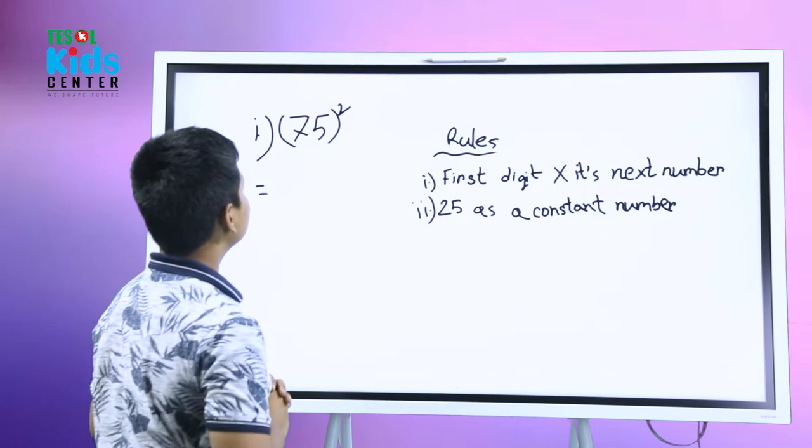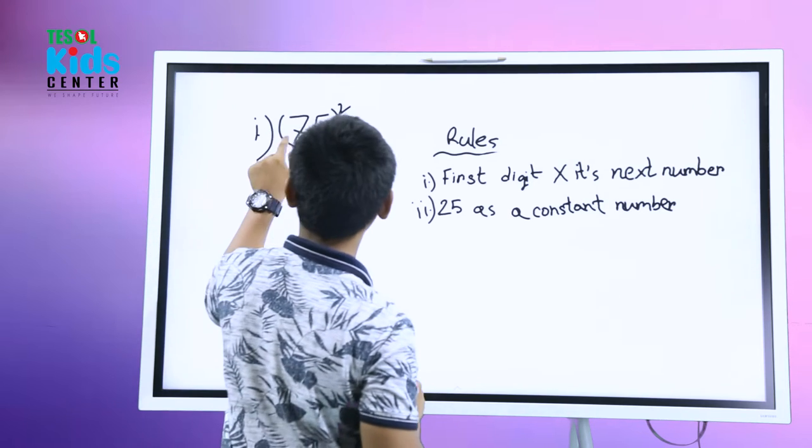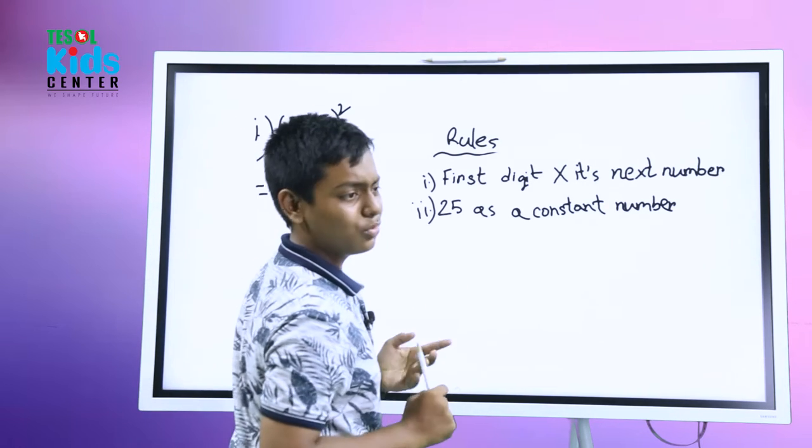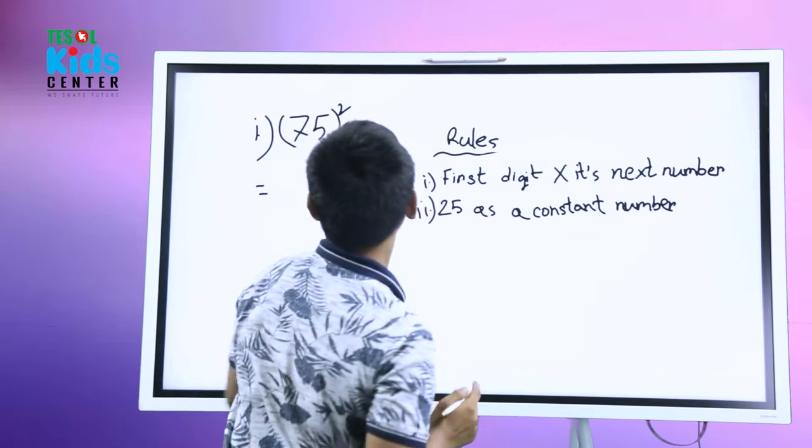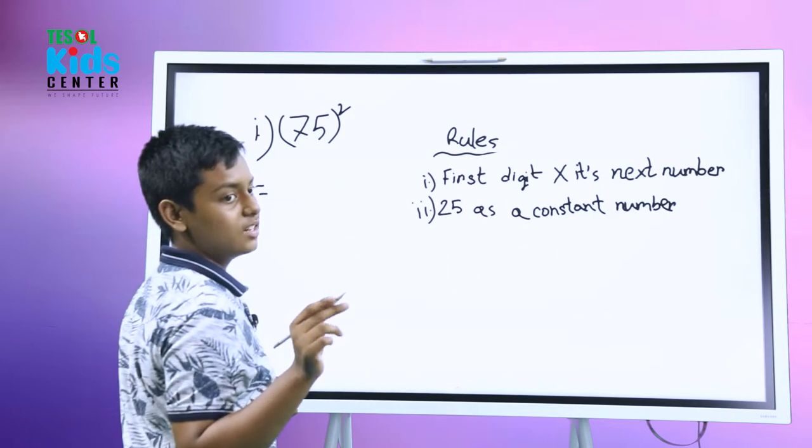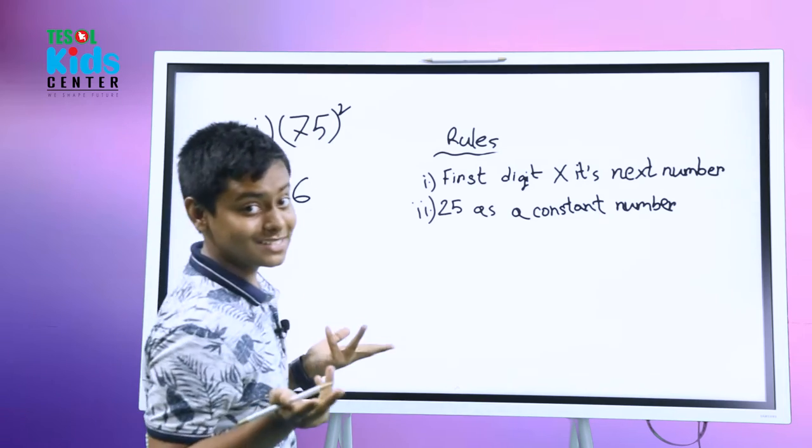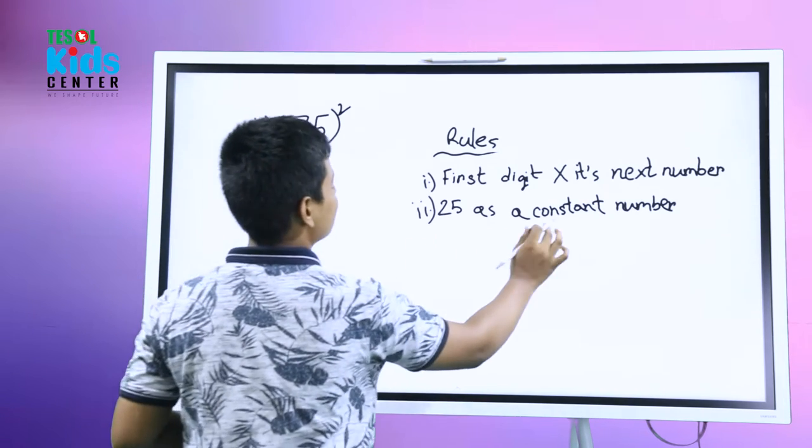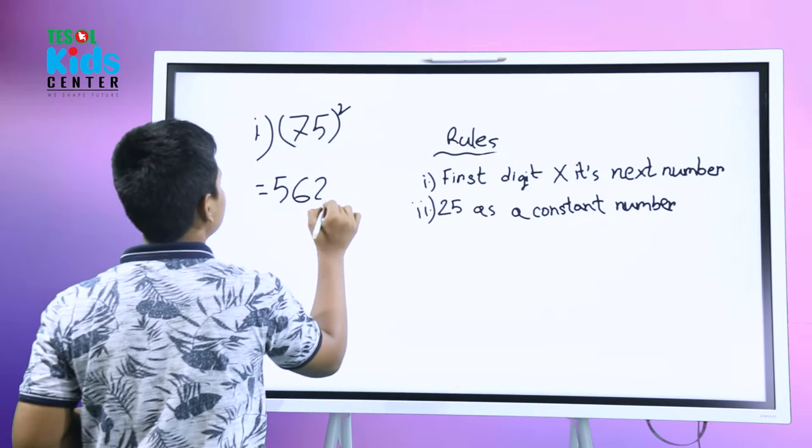So what's seven's next number? It's eight obviously. So we're going to multiply it: seven into eight. What does it come? 56. Seven eights are 56, very easy. And there 25 as a constant number - constant means that it's a permanent. So we're going to put here 25 as a constant number.